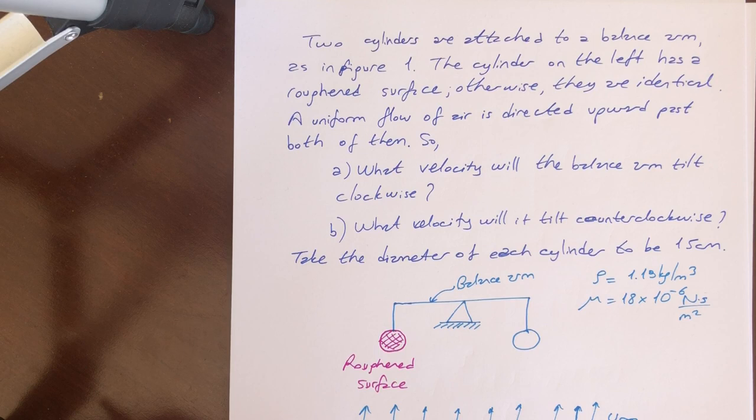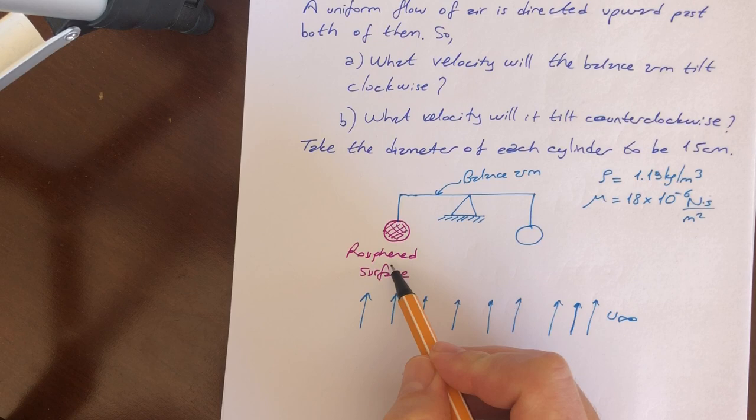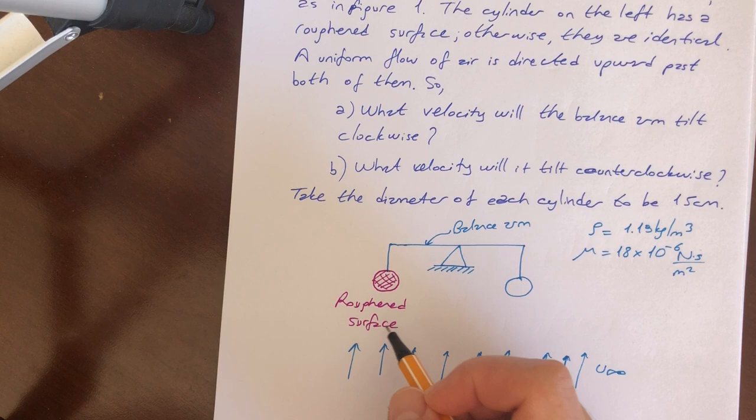The question is: two cylinders are attached to a balance arm as shown in figure one. The cylinder on the left has a roughness surface. As you see here, we have a figure. The red one has a roughness surface. The cylinder on the left has a roughness surface.